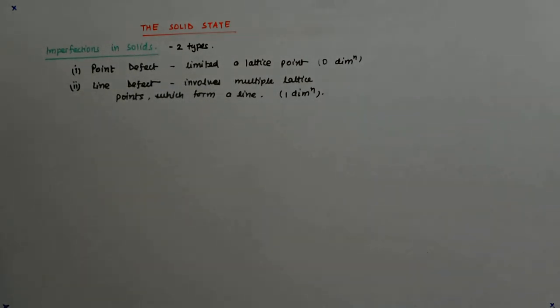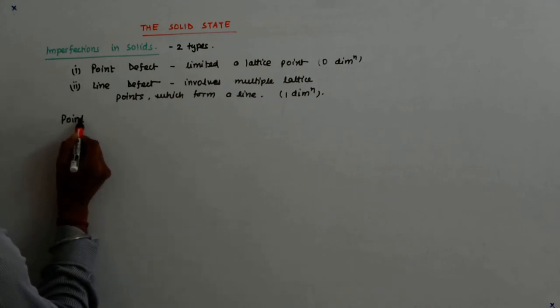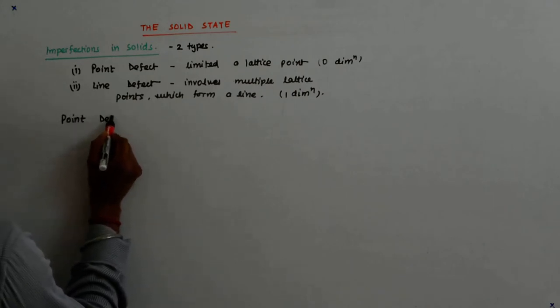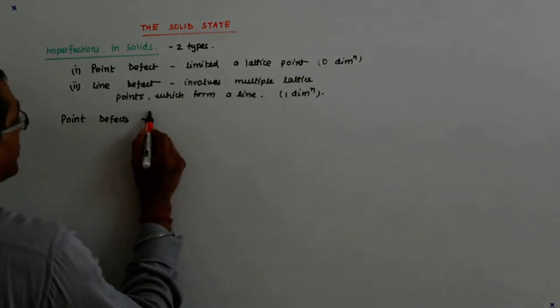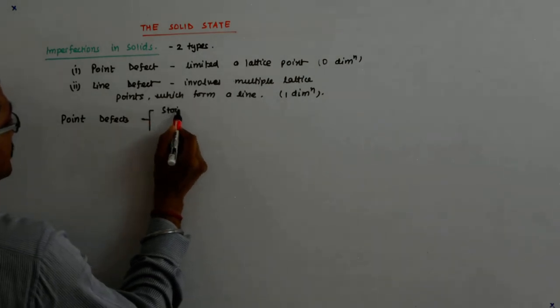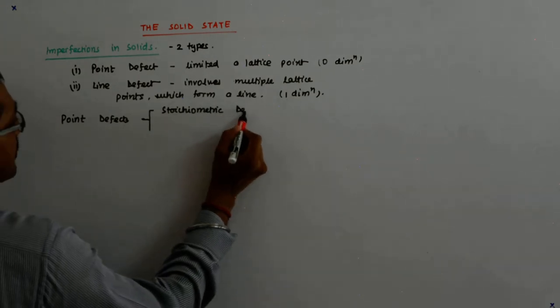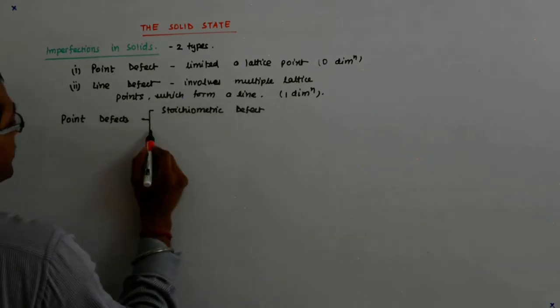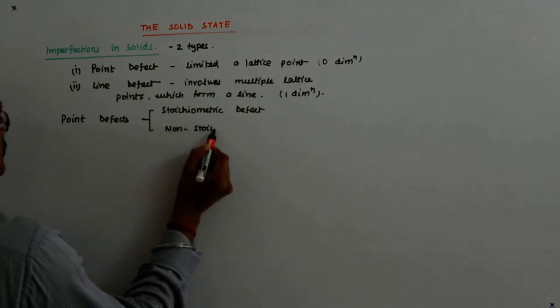As far as the point defects are concerned, we have two kinds of defects. Among the point defects, we have the stoichiometric defect and the non-stoichiometric defect.